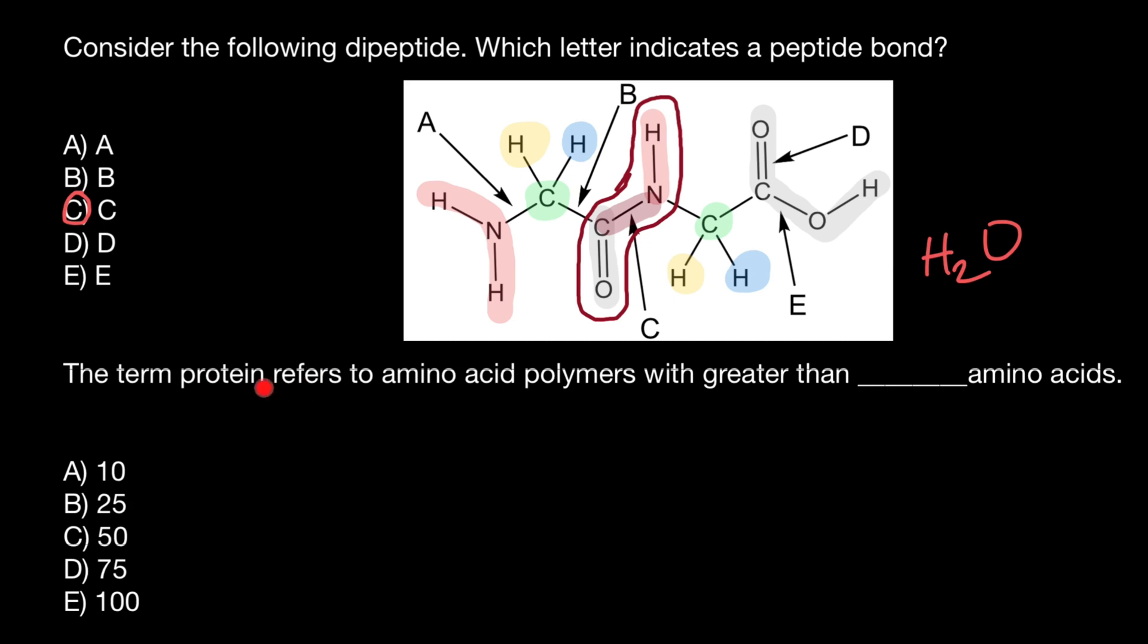The term protein refers to amino acid polymers with greater than blank amino acids. You have to choose how many amino acids have to be in a polypeptide so we would refer to such polypeptide as a protein.